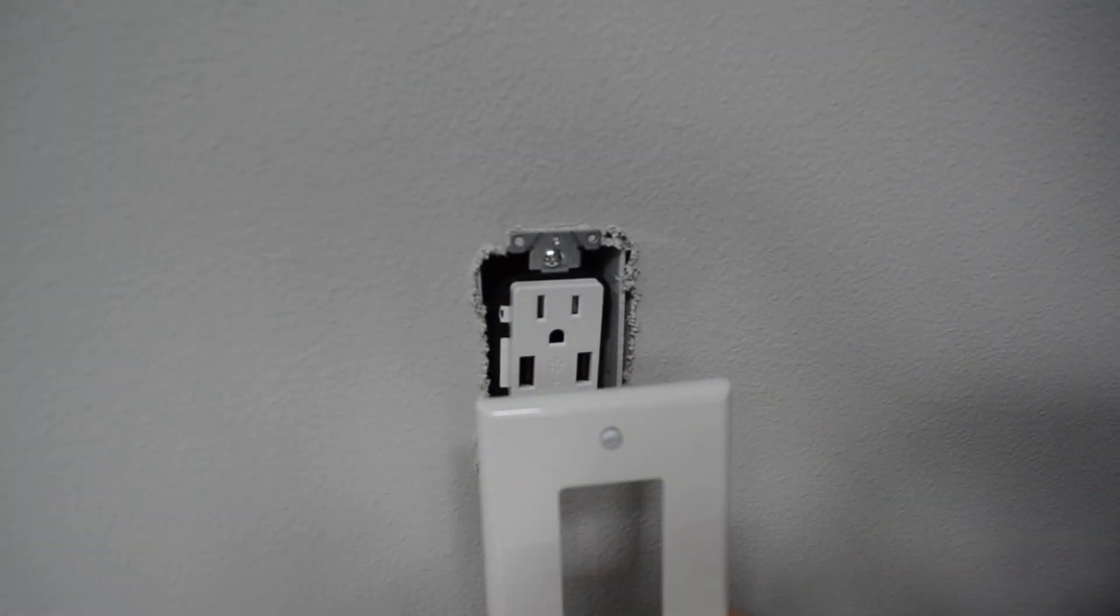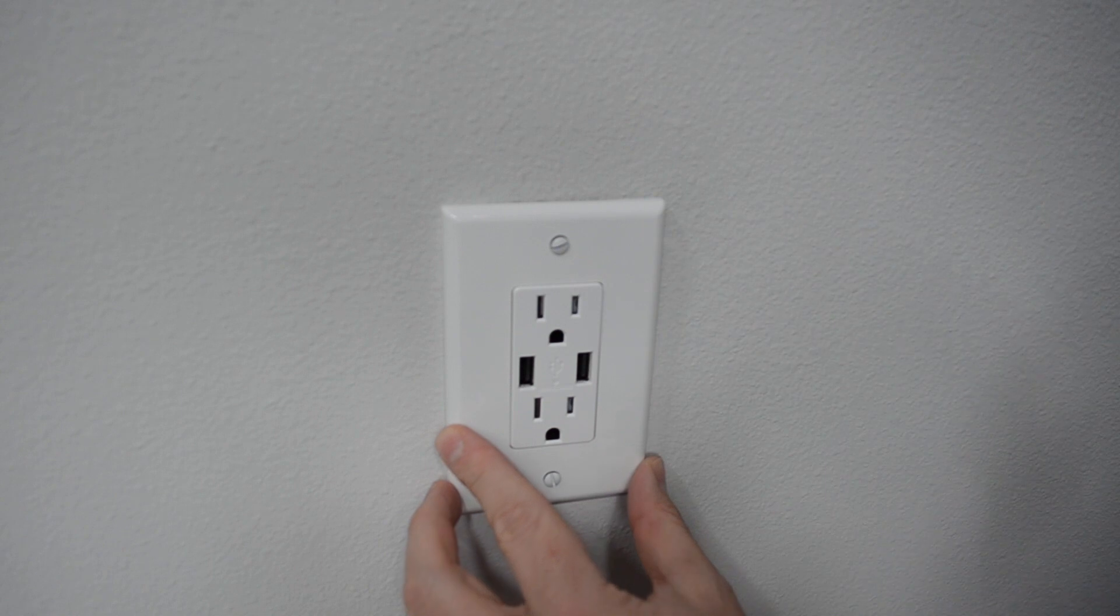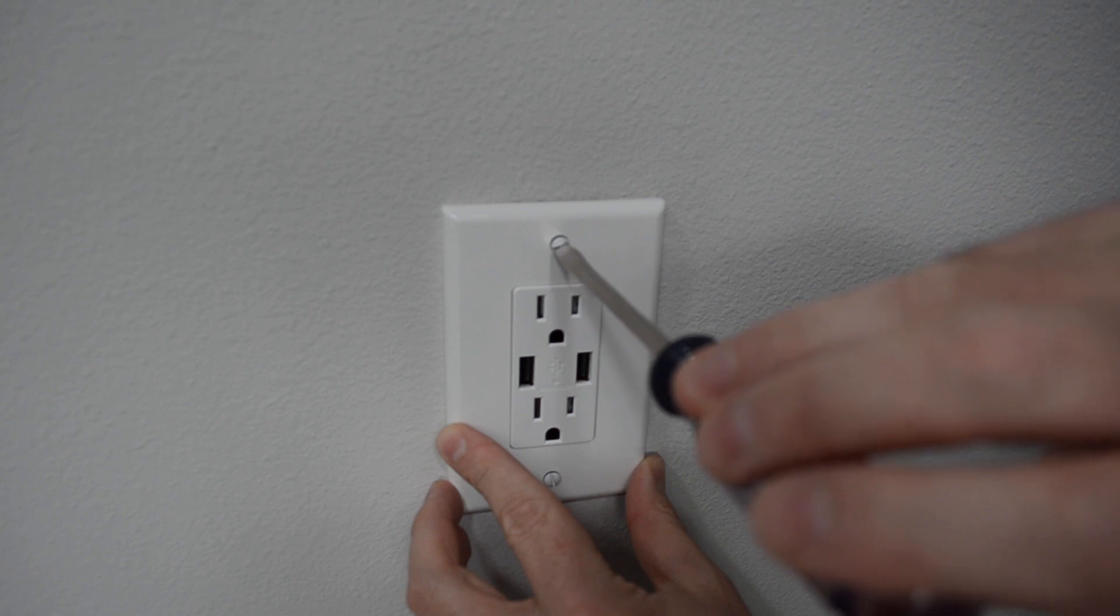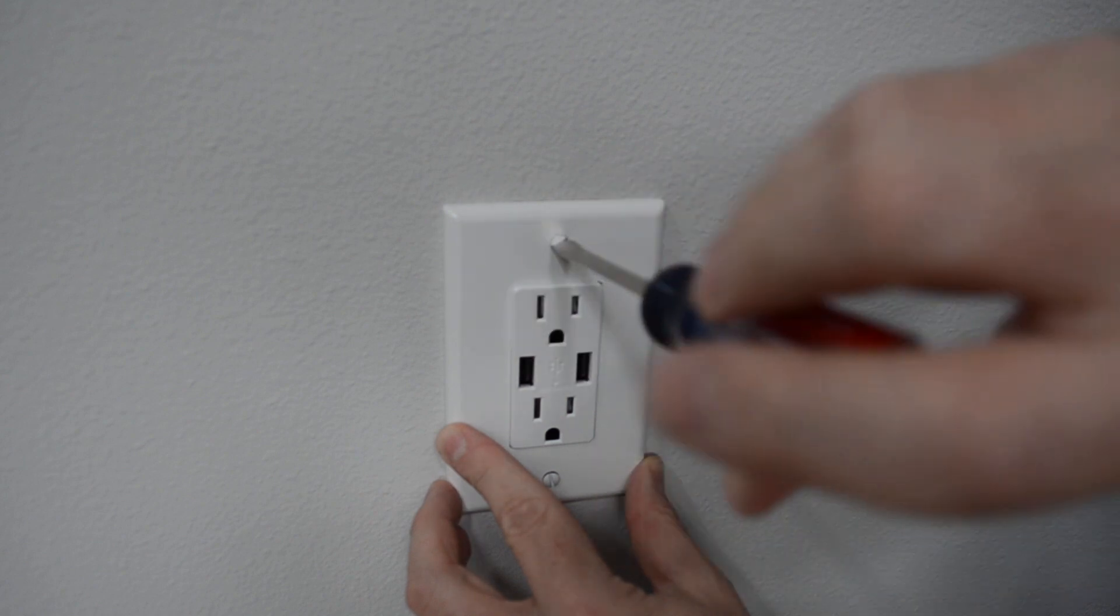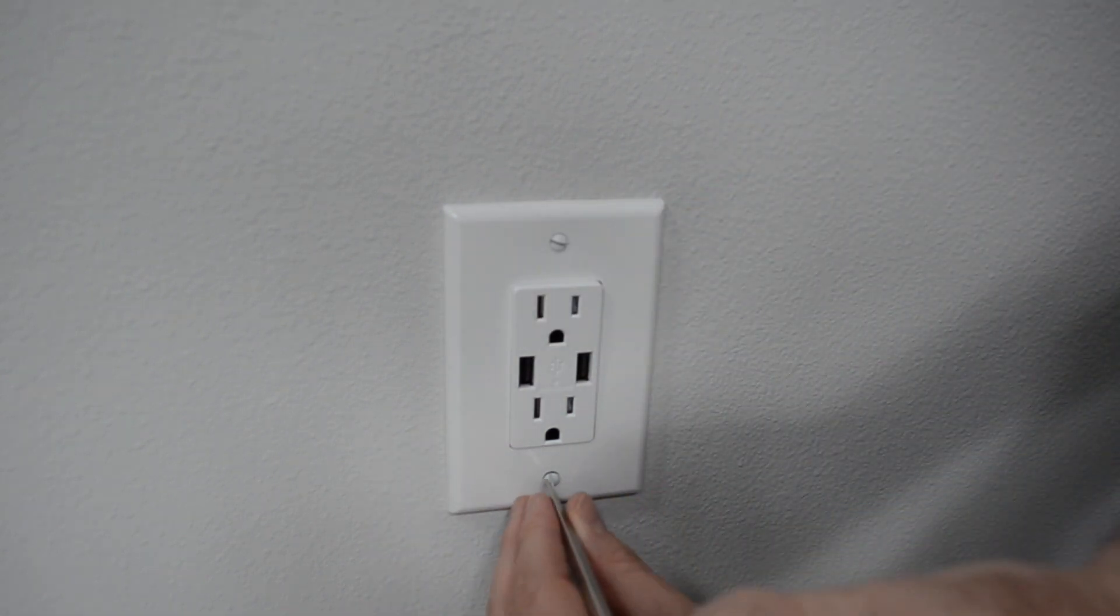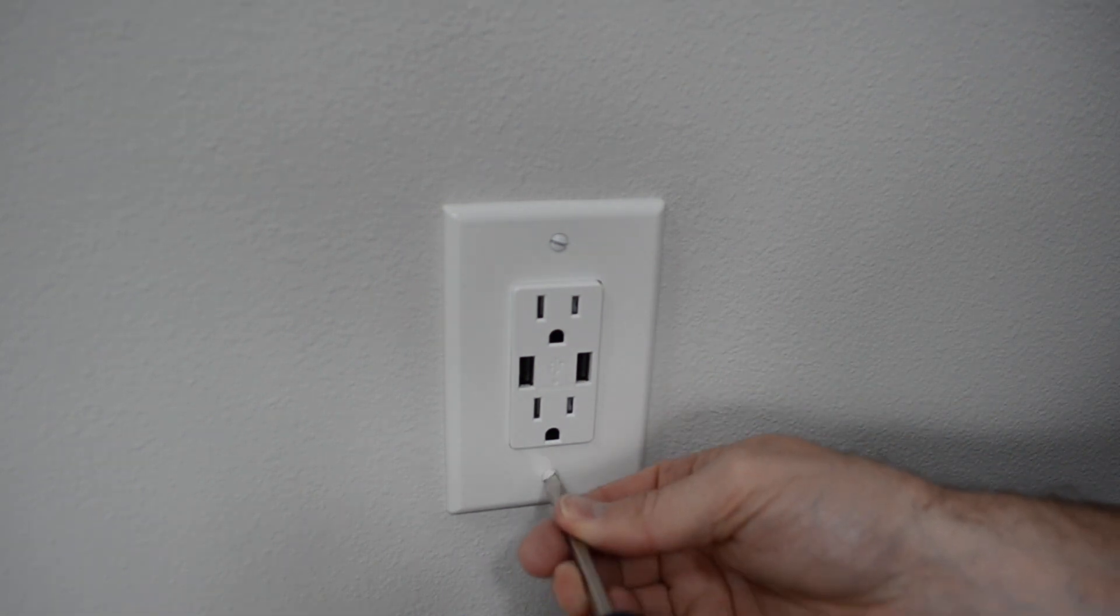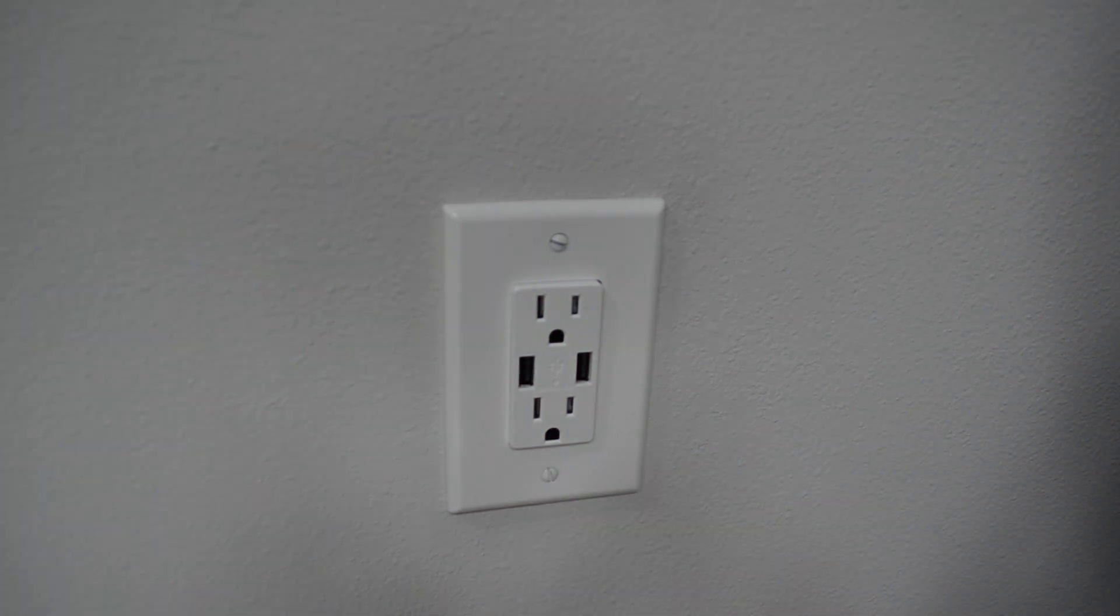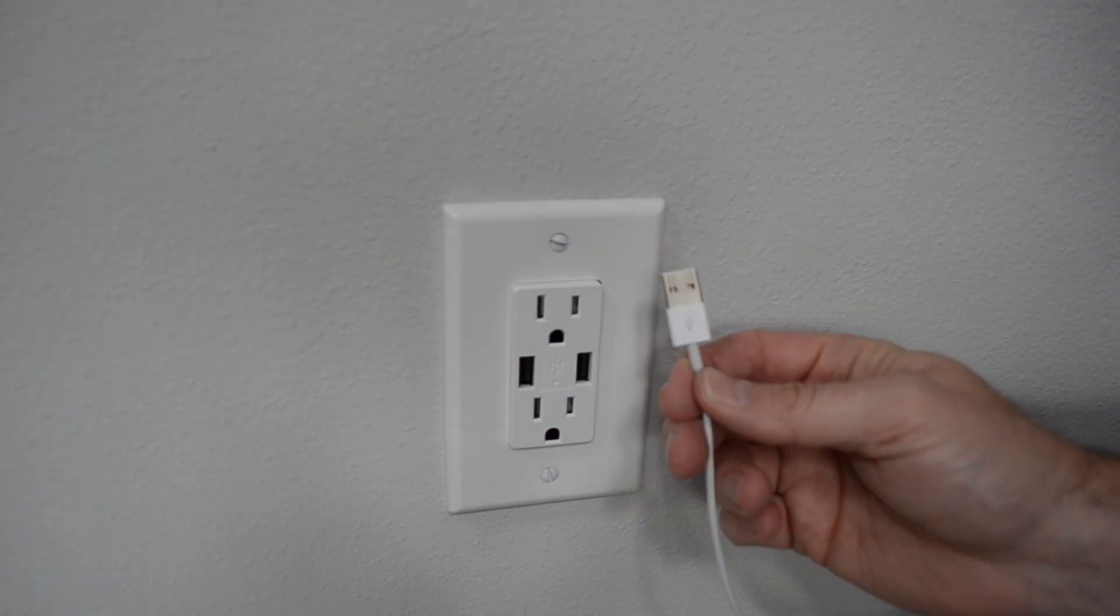The cover plate looks a little bit different than the old one. This is the old one. And the new one has a rectangle in it. Now that the cover plate is on, the next thing to do is to go back to the garage, turn on the circuit breaker and then test the outlet. Both the electrical plug and the USB charger.